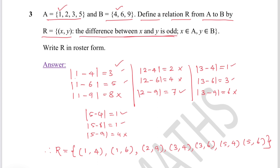Now take the second element of A, which is 2: |2-4| = 2 (even, not possible), |2-6| = 4 (even, not possible), |2-9| = 7 (odd, possible). So (2, 9) is a valid pair. Next, element 3: |3-4| = 1 (odd, possible), |3-6| = 3 (odd, possible), |3-9| = 6 (even, not possible).